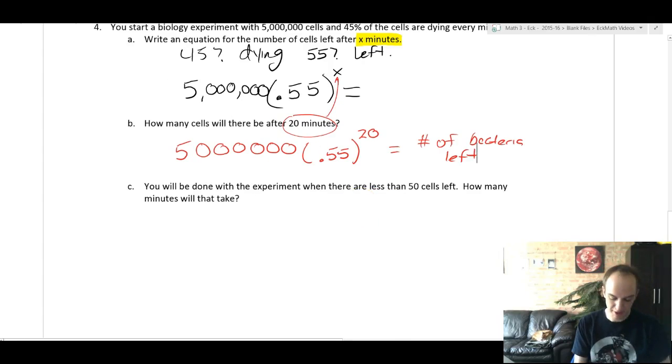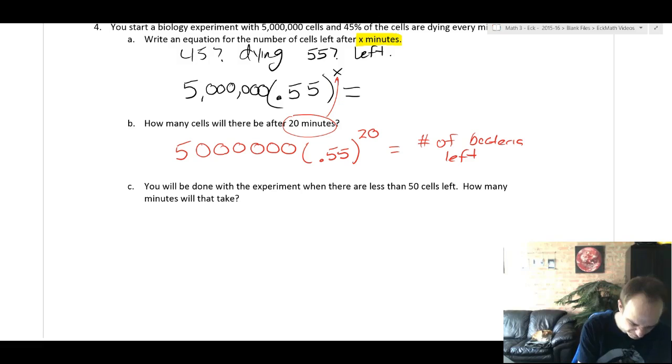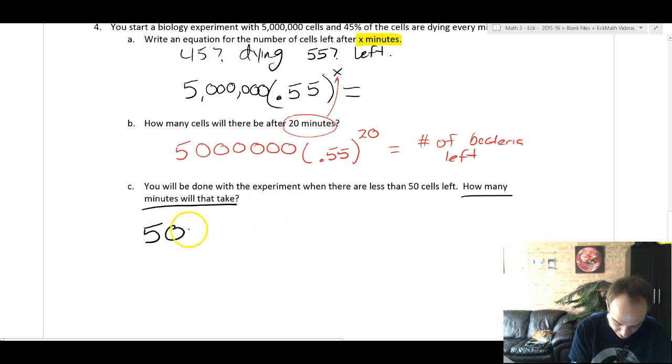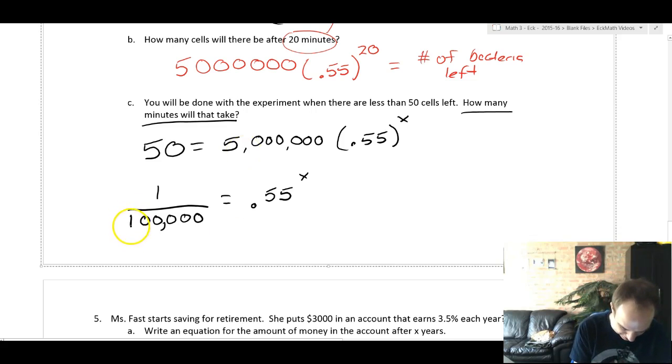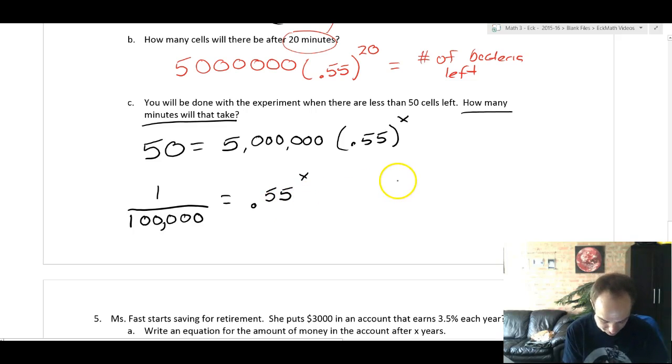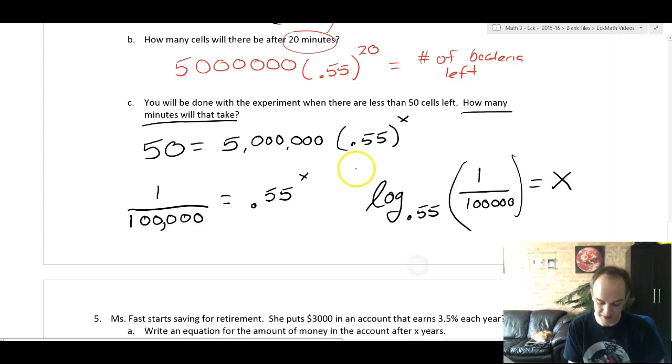And then the last one says, you'll be done with the experiment when there are less than 50 cells left. How many minutes will that take? This one is now back to asking how many minutes. So that means we're going to be solving for x. So you'll set up 50 equals 5 million times 0.55 to the x, which dividing by 5 million by 50, one of the zeros cancels out and the five canceled out. So we get 1/100,000 equals 0.55 to the x. And then we do the log again. So we're going to do log base 0.55 of 1/100,000 equals x. It's kind of a gross thing, but this is something that you're just going to put in your calculator.